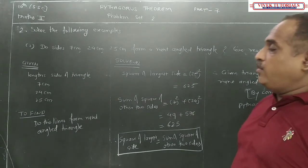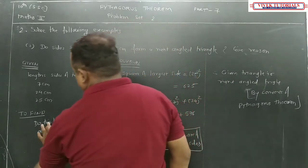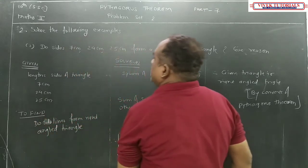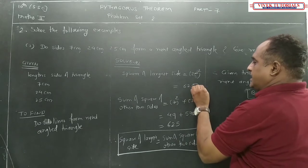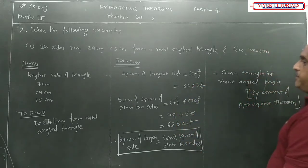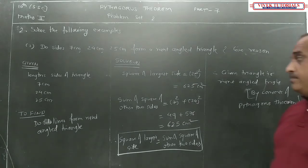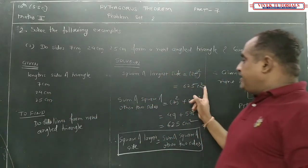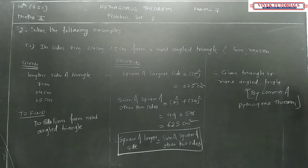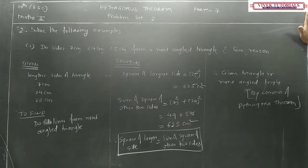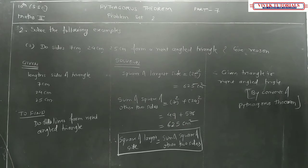Once again: they have given three sides and asked whether they form a right angle triangle. The square of the largest side equals the sum of the squares of the other two sides. So the given triangle is a right angle triangle by the converse of Pythagoras theorem. Copy it down properly — this is the type of question given in the textbook as a solved question, so be very careful about units (centimeter squared) in board exams.